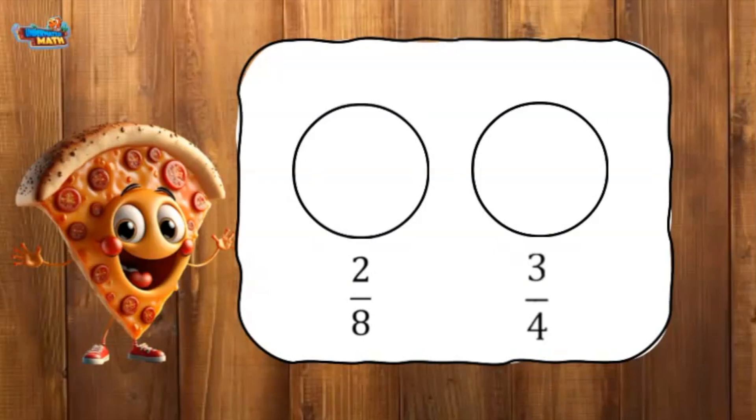When comparing the models, they must be the same exact size. Look at the denominator of the fraction two-eighths. It tells us for this model we need to split it into eight equal parts. The numerator tells us that two of those parts are filled in.